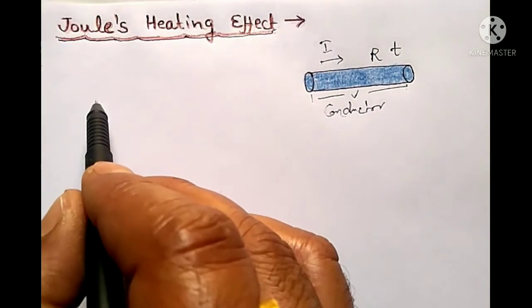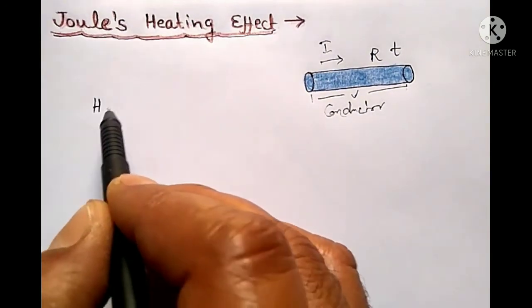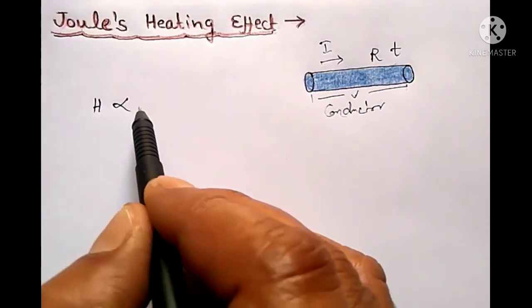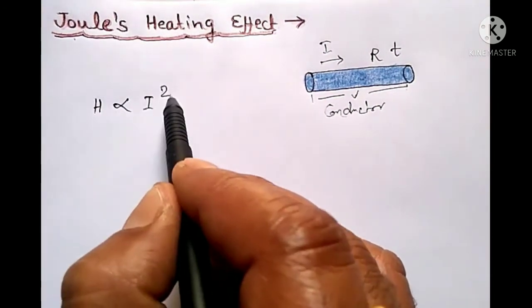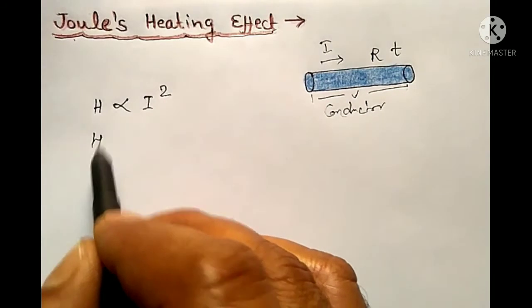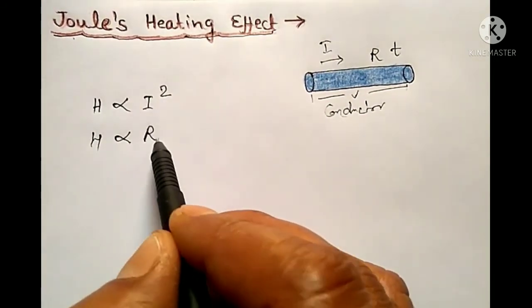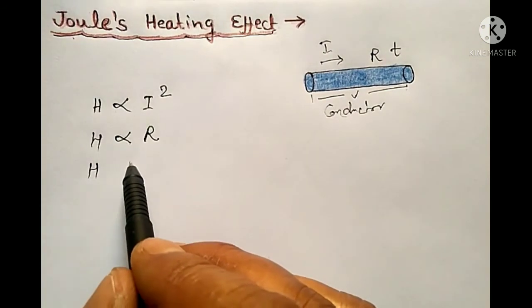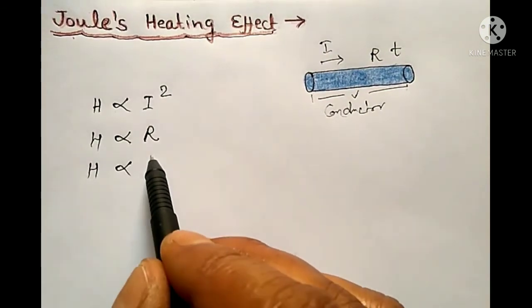Then according to Joule, heat produced in this conductor is directly proportional to current squared, and also heat is directly proportional to resistance of the conductor, and also heat produced is directly proportional to time.